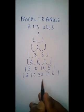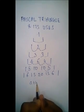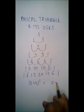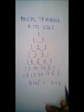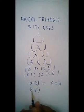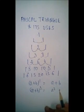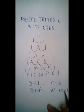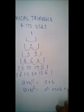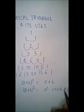Now let's look at the uses of this triangle in mathematics. We know that (a + b) raised to power 1 is equal to a + b. And (a + b) raised to power 2 is equal to a squared plus 2ab plus b squared.